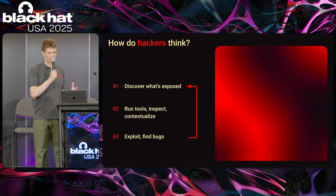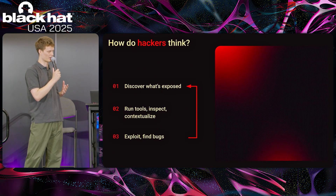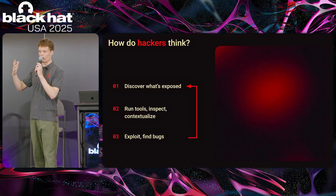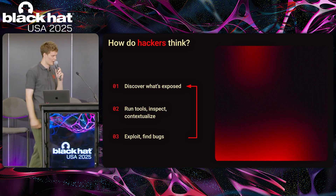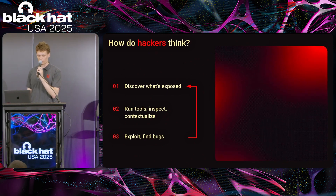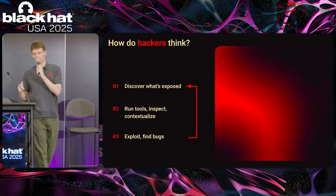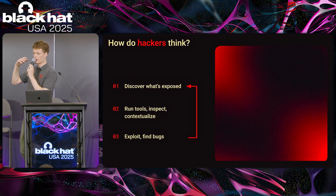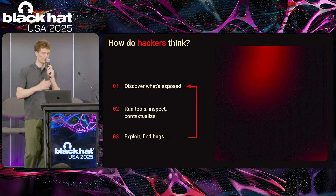On the other hand, I want to talk about how hackers think, based on working together with many hackers. The first thing a hacker does is look for all of an organization's assets on the internet — everything that's externally facing. They then run a suite of different tools, either developed themselves or from the open source community. They inspect the outputs of those tools, build context, and build knowledge about the organization. Finally, they try to exploit the system and find bugs, doing that thousands of times before likely hitting on one.